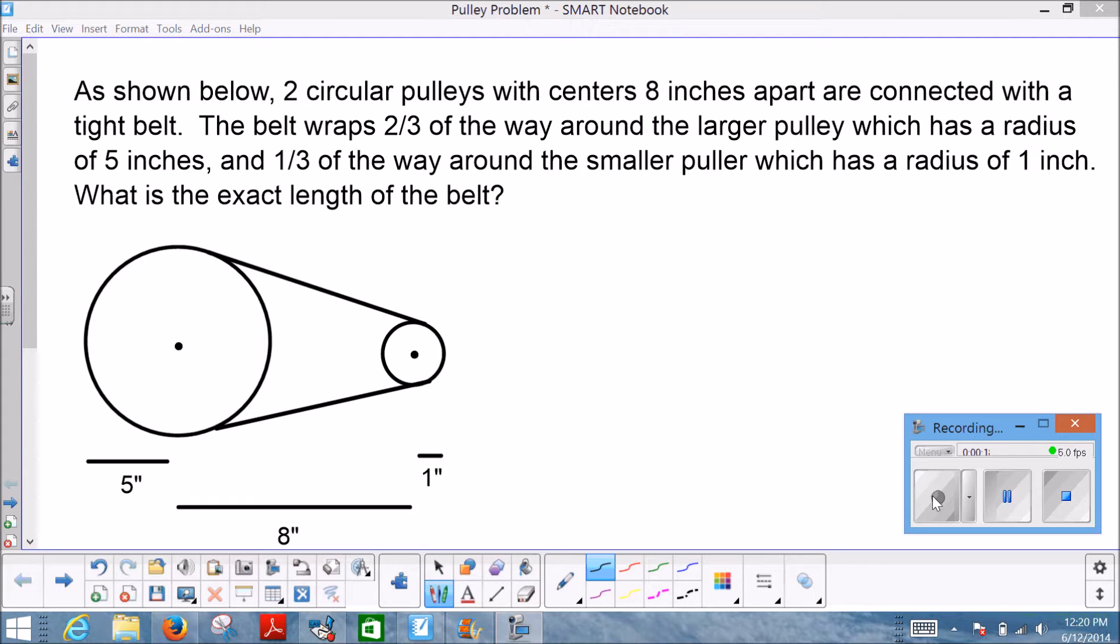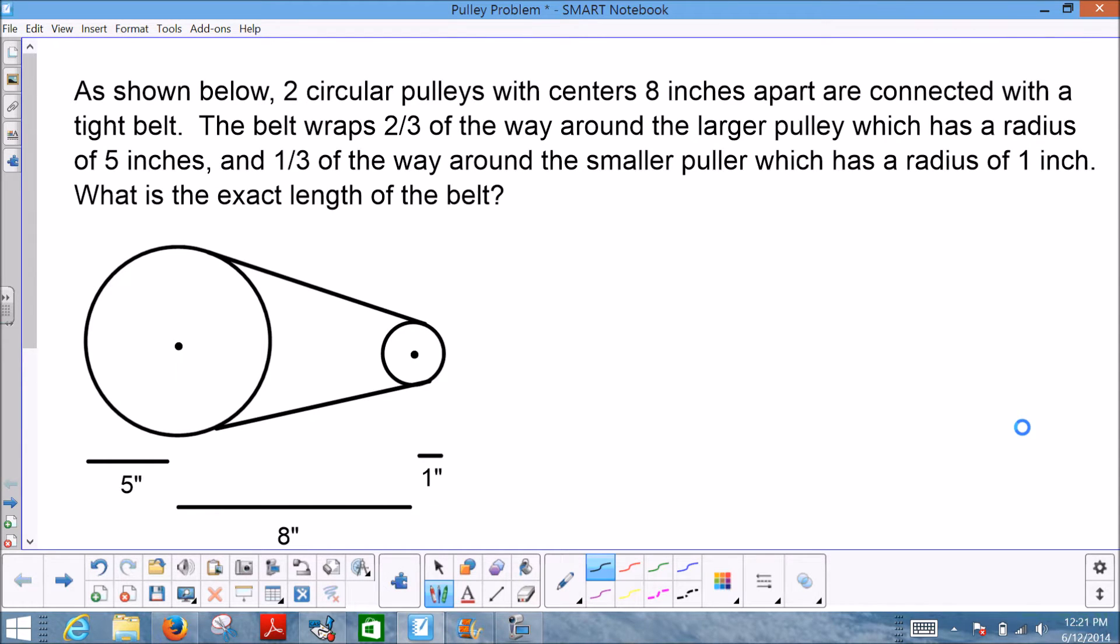Let's go ahead and read this. It says: As shown below, two circular pulleys with centers 8 inches apart are connected with a tight belt. The belt wraps 2/3 of the way around the larger pulley which has a radius of 5 inches, and 1/3 of the way around the smaller pulley which has a radius of 1 inch. What is the exact length of the belt?